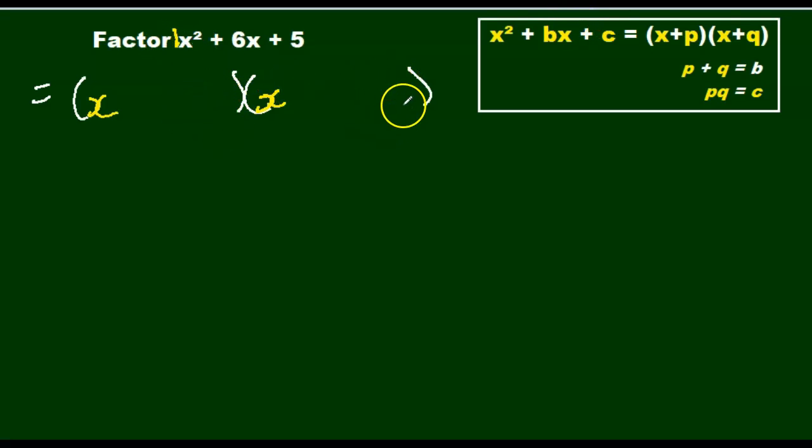Then we have to figure what we're going to put for the next term in our parenthesis. We have to look at our constant to figure that out. What are our factors of 5? Well, 5 is equal to 1 times 5. That's the only two factors you have, 1 and 5.